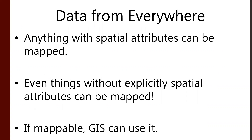If we can map it, we can use it in GIS. If we can assign spatial coordinates and connect those attributes with that linkage, we can do it in GIS. If we have things that aren't explicitly spatial, we can sometimes map those too. Most of it depends on formatting. You might have a list of addresses that doesn't seem immediately inputable into GIS, but there are ways to do that through geocoding.